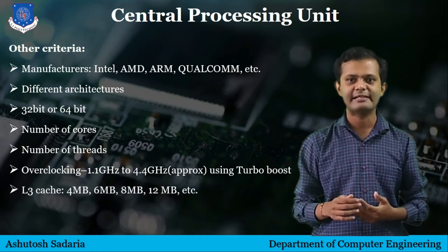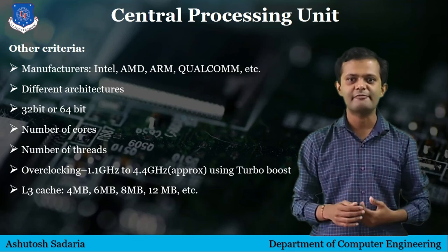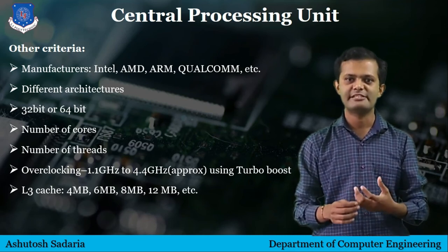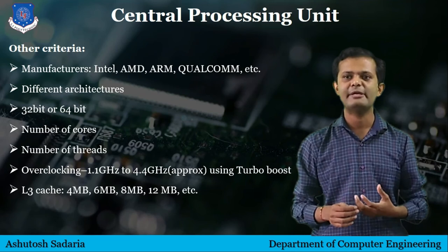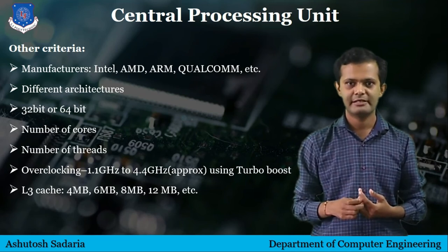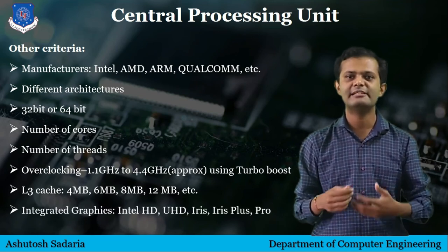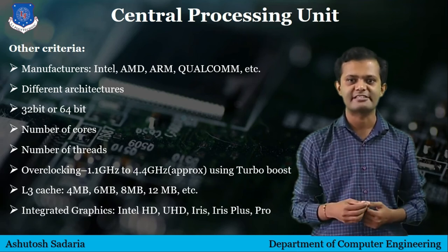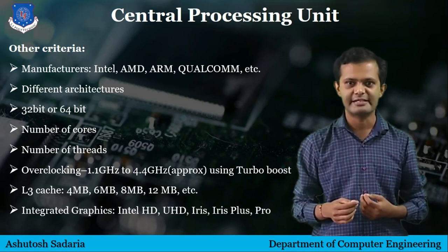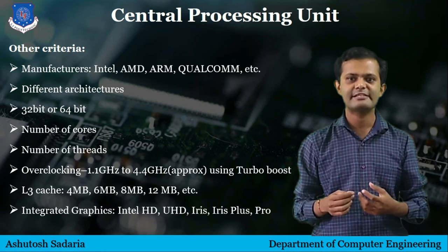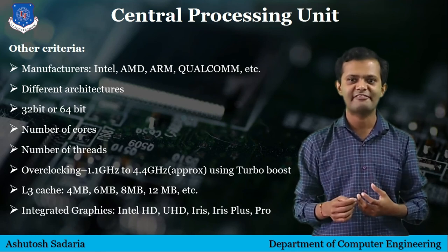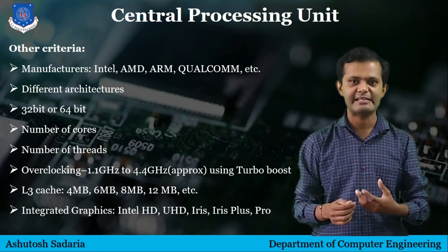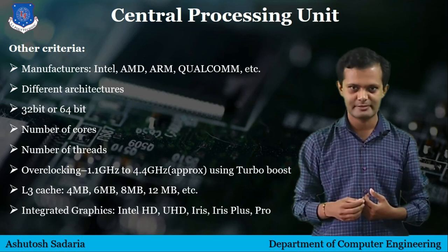Another component is L3 cache. There are several types of L3 cache memory available in different processors, such as 4MB, 6MB, 8MB, and 12MB cache memories. Many companies also bundle their processors with integrated graphics — Intel, for example, offers integrated graphics called Intel HD, UHD, Iris, Iris Plus, and Iris Pro.